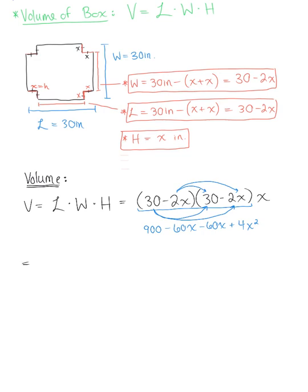We can continue rewriting our volume as 900 minus 120x plus 4x squared, and don't forget that x on the outside. Last but not least, we want to distribute this x through to each piece.